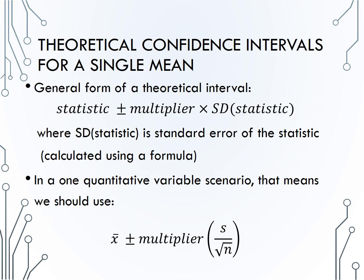The statistic is always calculated using the standard error formula. For a single quantitative variable, that means we should use the formula x bar plus or minus a multiplier times s over the square root of n. Note that the multipliers are now coming from the t distribution and not the normal distribution.